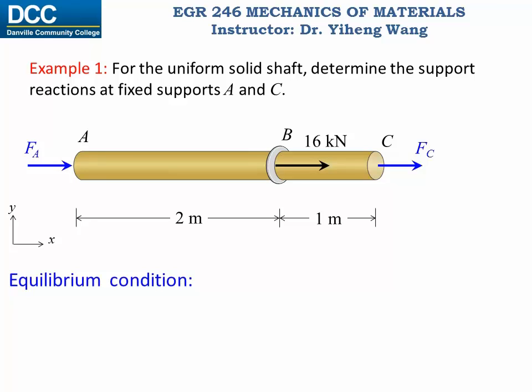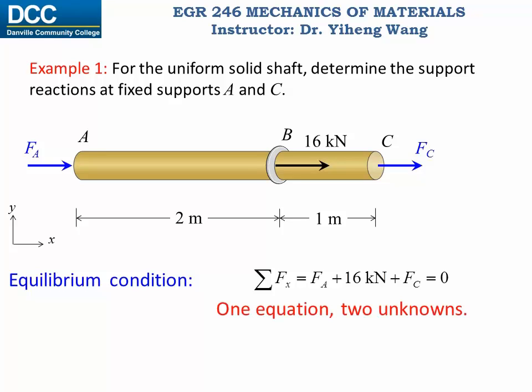We would write our equilibrium equations. However, even though this is a 2D static problem, we can only write one equilibrium equation, which is the resultant force along the x direction: FA plus 16 kN plus FC equals zero. The reason is because there is no force along the y direction, and also all three forces are collinear, therefore there is no moment equilibrium equation. So the issue is we have only one equation but two unknowns, FA and FC. We learned in statics that we couldn't solve this because it is a statically indeterminate member.